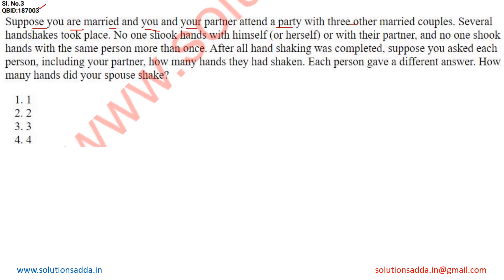Let's represent yourself as X and your spouse as X̄. Apart from you, there are three other married couples in the party. Let's represent them as well: Y and Ȳ make one couple, Z and Z̄ make another couple, R and R̄ make another couple.